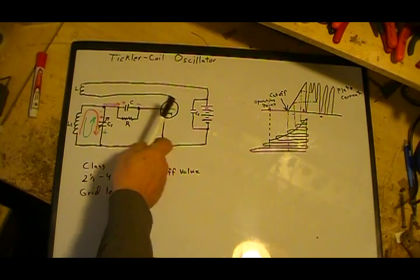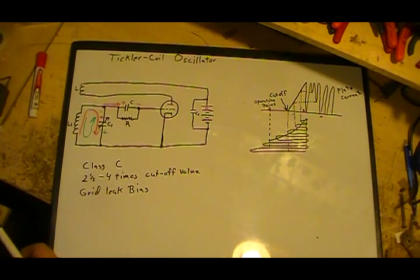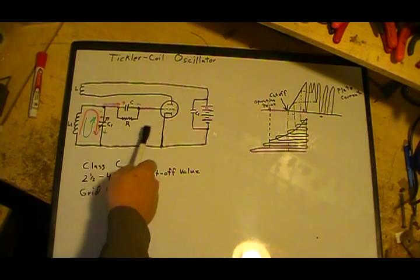The nice thing about class C is it's most efficient for the tube. The efficiency is the greatest at this point, generally above 80% efficiency on oscillators.